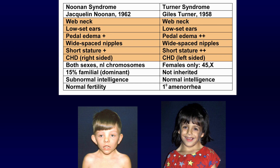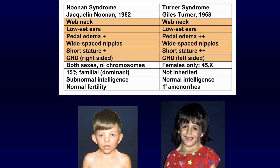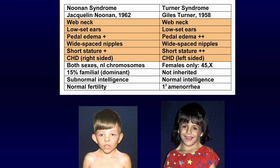Coming to the fact of which disease affects which sex: in Noonan syndrome both sexes can be involved, so the patient can be male or female. Here is the catch — in Turner syndrome only females are affected, so there is no male patient in Turner syndrome.